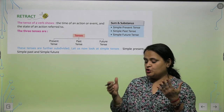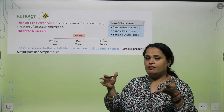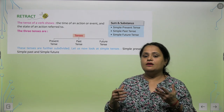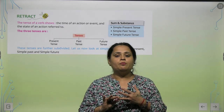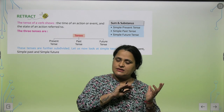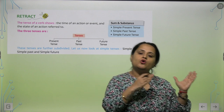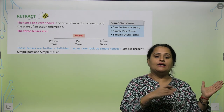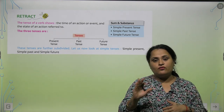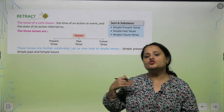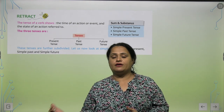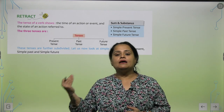Present tense — joh abhi, right now we are in the state, that is called present state. Past tense — joh humare saath ho chuka hai, that is past tense. And future — joh humare saath hone wala hai, ya joh hum kare.